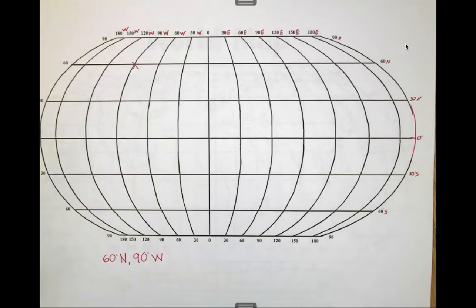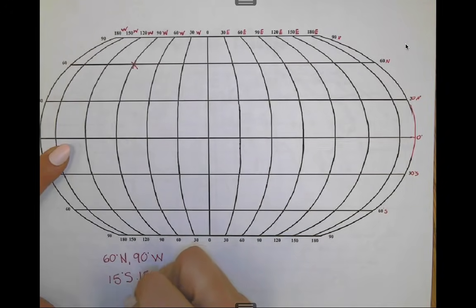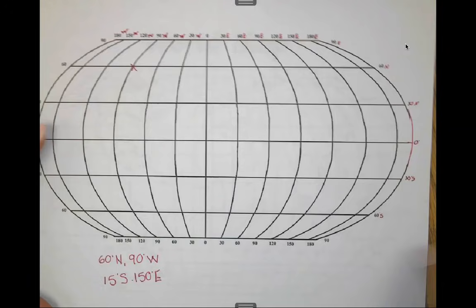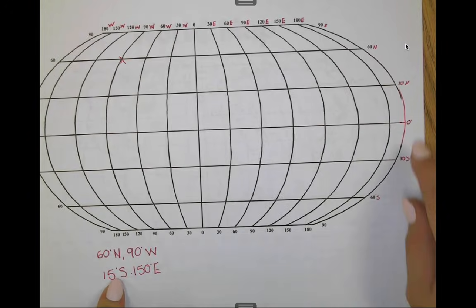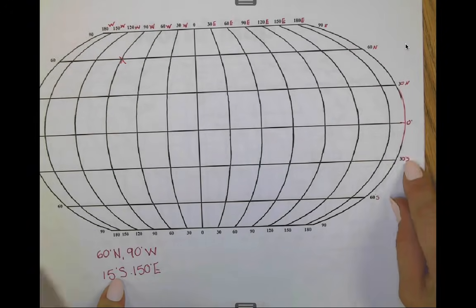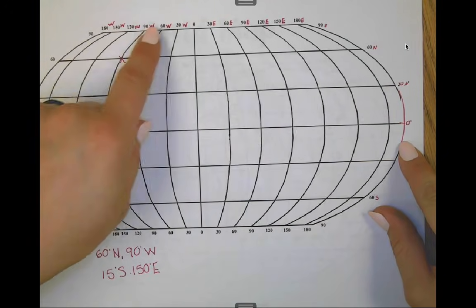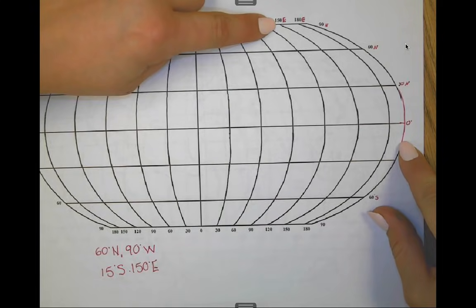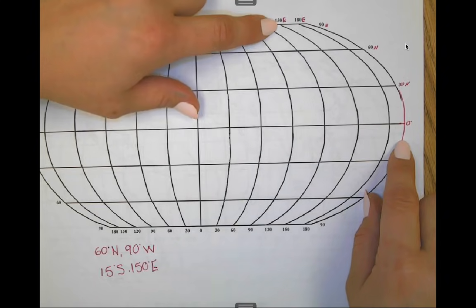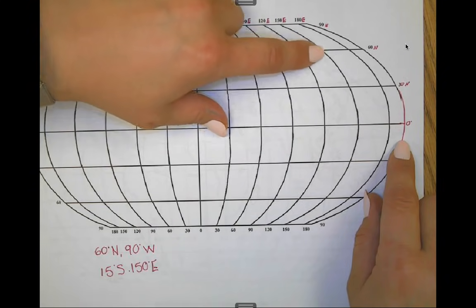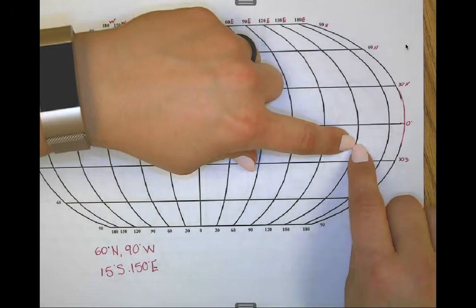Let's look for 15 degrees south and 150 degrees east. Are we in the northern or southern hemisphere? We're in the southern hemisphere. 15 degrees — I have 0 and 30, so I'm going to be right in the middle. And 150 degrees east — I have my west side over here and east over here. Here's my 150 degrees. It's really important to remember that you're going to have to bend with the line of longitude. So I follow 150 degrees down, 15 degrees south, and meet right here.